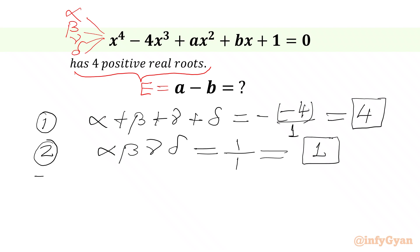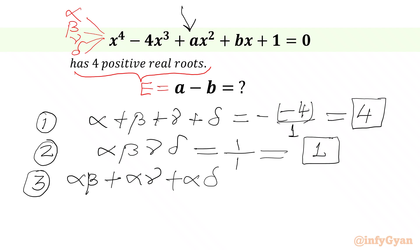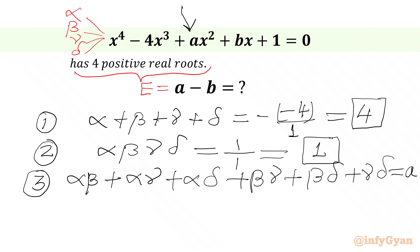Now we will calculate the sum of roots taken 2 at a time, which will be equal to A. Writing all combinations of 2: alpha·beta plus alpha·gamma plus alpha·delta plus beta·gamma plus beta·delta plus gamma·delta. This equals the coefficient of x² which is A, divided by the coefficient of x⁴, so the value is A. This is our third equation.